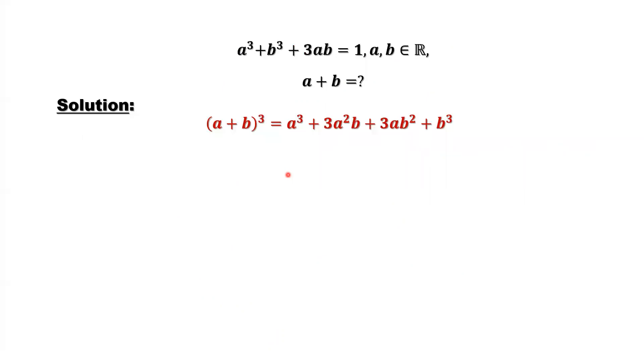We have this basic formula. Why do we want to use this formula? Because we want to find a plus b. We want to use the original given information. Rewrite this formula in terms of a plus b. We know (a + b)³ equals a³ plus 3a²b plus 3ab² plus b³.